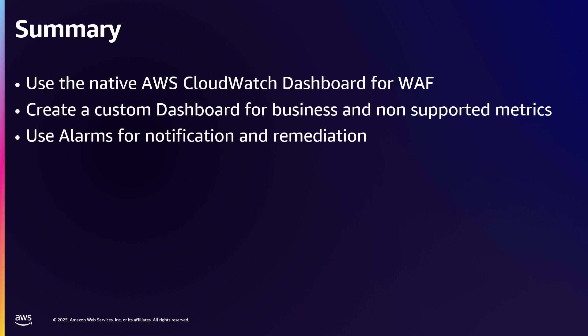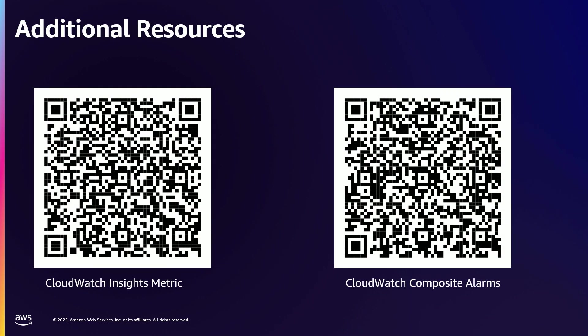By way of summary, the recommendation is to use the AWS native CloudWatch WAF dashboards, use custom dashboards for business use cases and any non-supported metrics important to your business, and use alarms for notification and remediation. Additional resources: CloudWatch Composite Alarms, which you can use when you have multiple alarms you want to combine to perform a particular action; and CloudWatch Insights Metric if you want to do a search on top of your metrics. These are resources you can use when setting up your observability using AWS WAF.